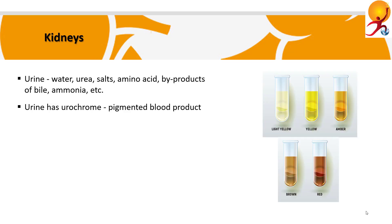Urine also contains urochrome, which is a pigmented blood product that gives urine its yellowish color. Anti-diuretic hormone or ADH from the pituitary promotes water retention by the kidney. It is not produced in the kidney but in the pituitary, and its secretion is regulated by a negative feedback loop involving blood water and salt balances. Depending on how dilute your blood is and how balanced the salt is, the amount of hormone produced differs.